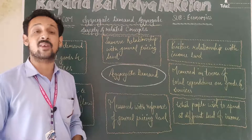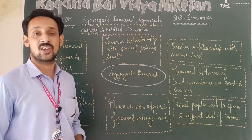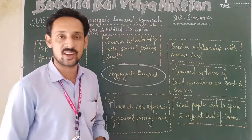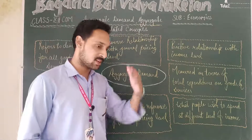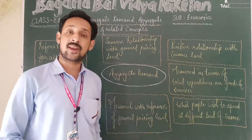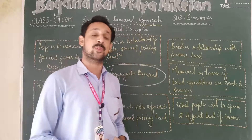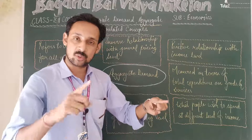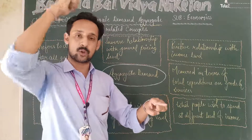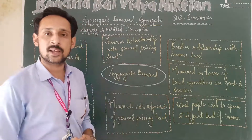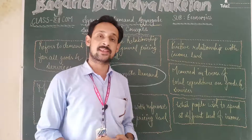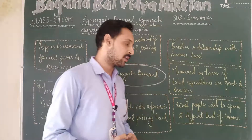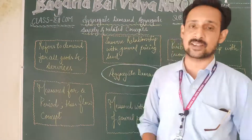During the Great Depression, Professor Keynes observed for the first time that even when there was a fall in prices, consumers were not ready to purchase goods. This created a paradox: in positive economics, we had learned that when prices fall, consumers demand more goods. But here, the opposite was happening — when prices were falling, demand was also falling.